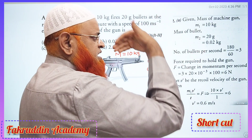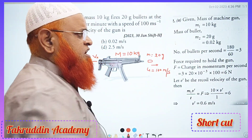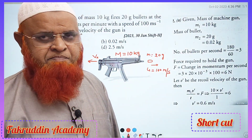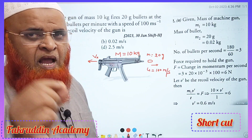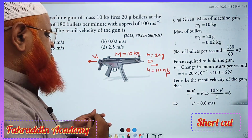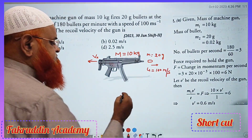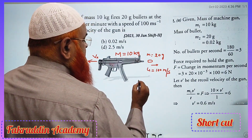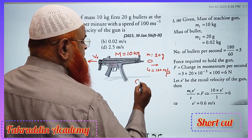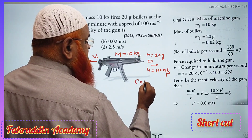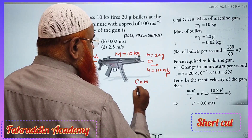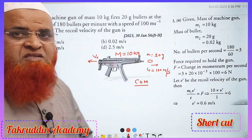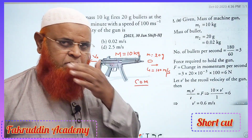The mass of the bullet and the number of bullets per second — nothing else is required. I will use a single step formula. What is that? I will use conservation of momentum.